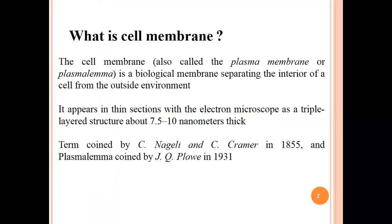Cell membrane, also known as plasma membrane, is a biological membrane separating the interior of a cell from the outside environment. It appears in thin sections under the electron microscope as a triple-layered structure of about 7.5 to 10 nanometers in thickness. First, Professor Nägeli and Cramer in 1855 coined the term plasma membrane; however, in 1931, Plow, another scientist, combined the term as 'plasma.'